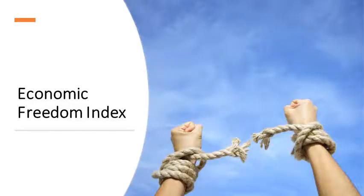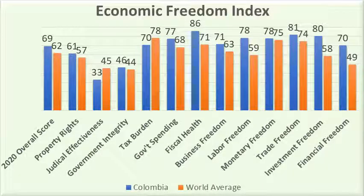The economic freedom index looks at four broad pillars: rule of law, government size, regulatory efficiency, and open markets, with subcategories in each pillar. The comparisons on this graph give a picture of a regulatory environment that is freer than the world average to create business. The Colombian government has historically been able to control their spending, and Colombia's metrics are more flexible in terms of regulations on work hours, minimum wages, and changes in employee terms.